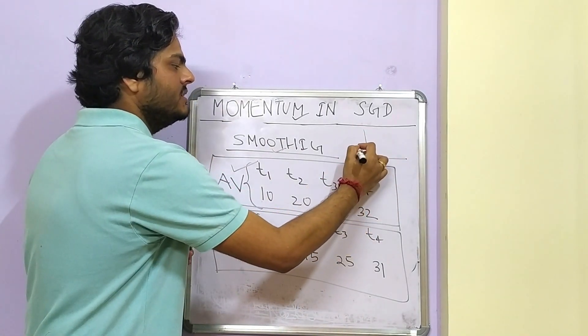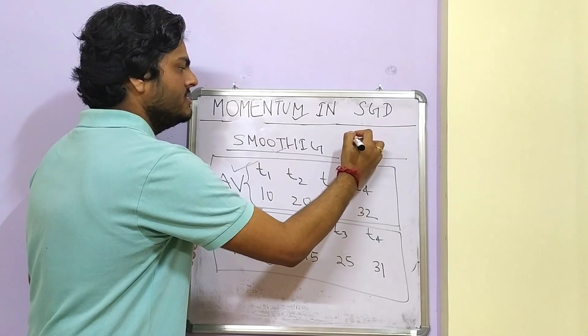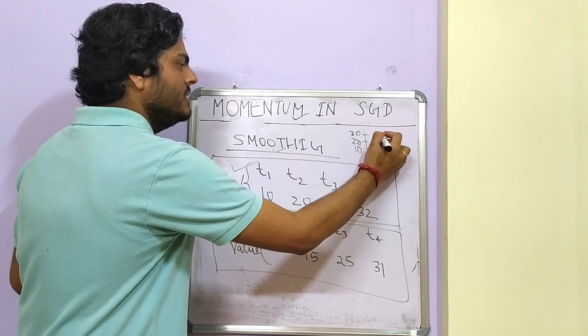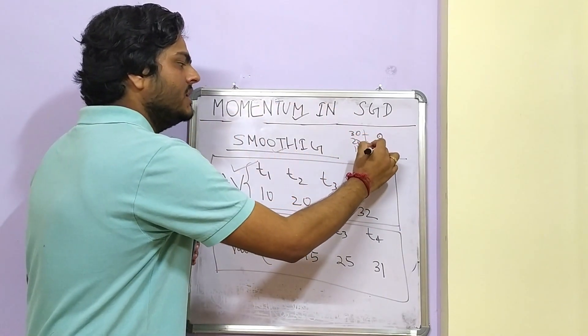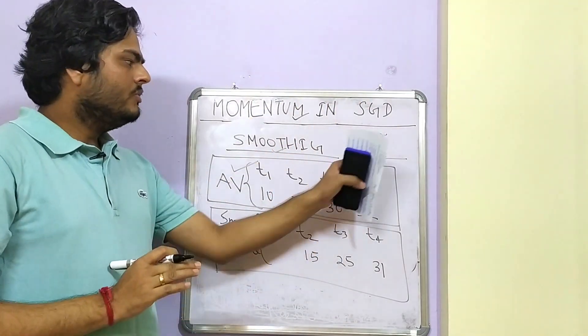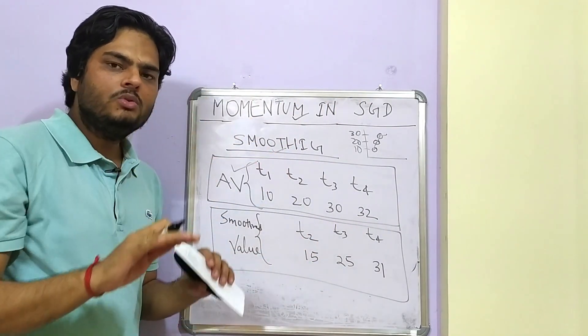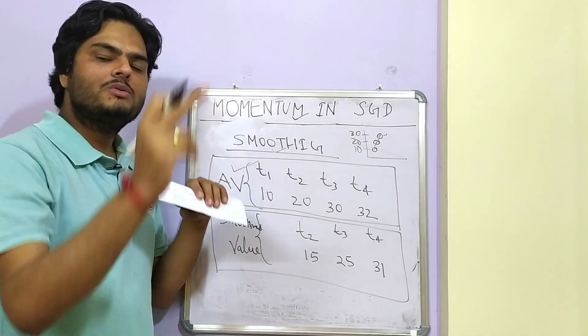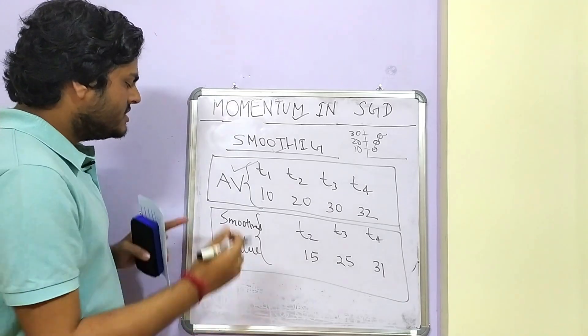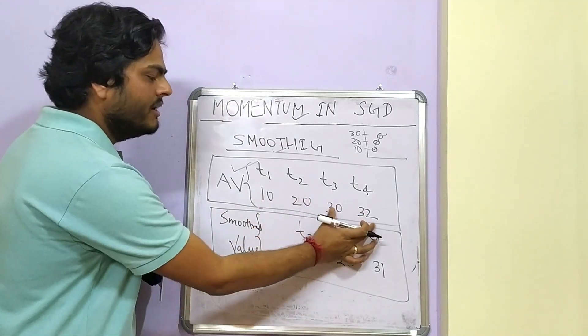If we plot this in an XY plane, so let us say this is 10, this is 20, this is 30. If we plot this, it will be 10 will come here, 20 will come here, 30 will go here. So the curve will be more up and down like this. We want to smoothen the curve. We want to remove the ups and downs of the curve.